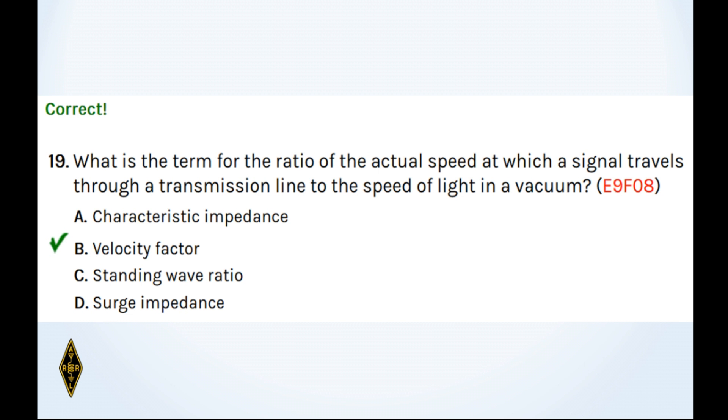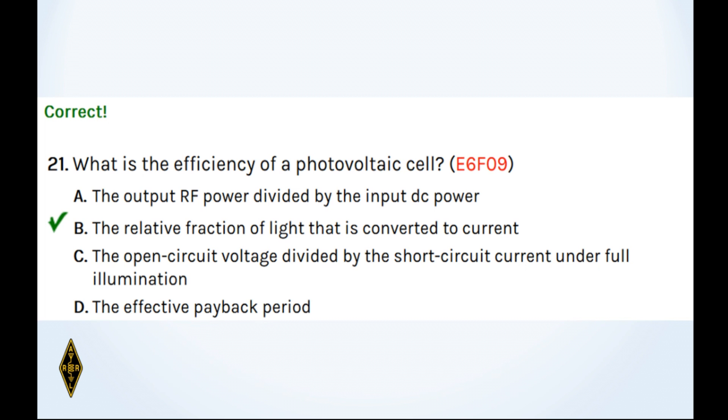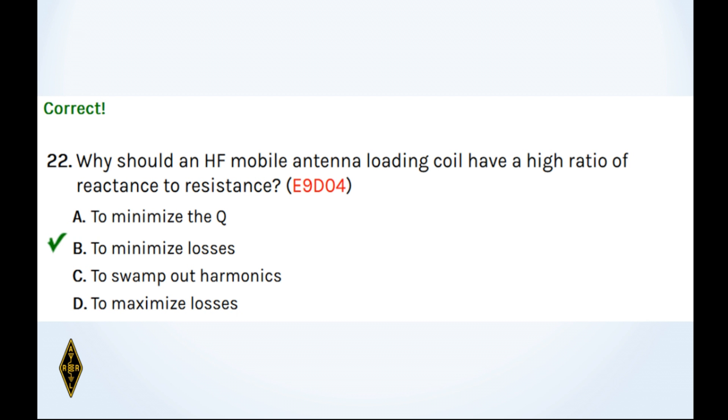And what is the symbol for a knot or inverter operation? Well, that's the 5, so 20D. And what is the efficiency of a photovoltaic cell? This is why you want to keep them clean. It's the relative fraction of light that is actually converted to current. A dirty photocell will block some of that light and you reduce efficiency. And 22, why should an HF mobile antenna loading coil have a high ratio of reactants to resistance? To minimize losses, to minimize the bad resistance that's only going to heat things up.